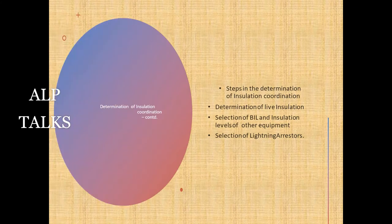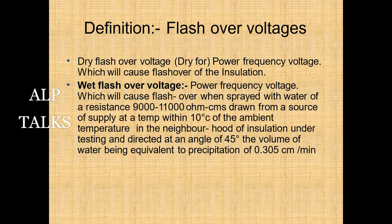The main steps in determination of insulation coordination are: first, determination of line insulation; second, selection of BIL and insulation levels of other equipment; and third, selection of lightning arresters. We will also deal with several important definitions.